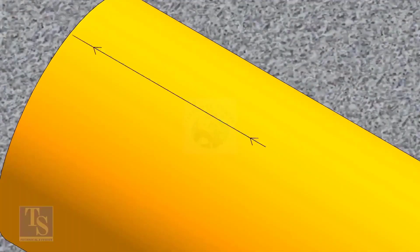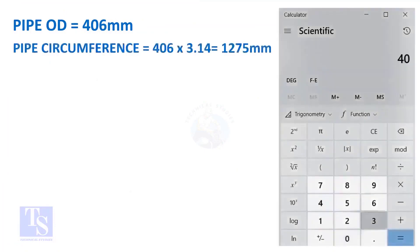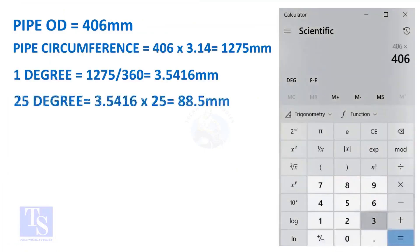Let us calculate the circumferential distance or arc length for 25 degrees. Multiply the OD by 3.14. You will get the circumference of the pipe. Divide the circumference by 360, you will get the arc length of 1 degree.